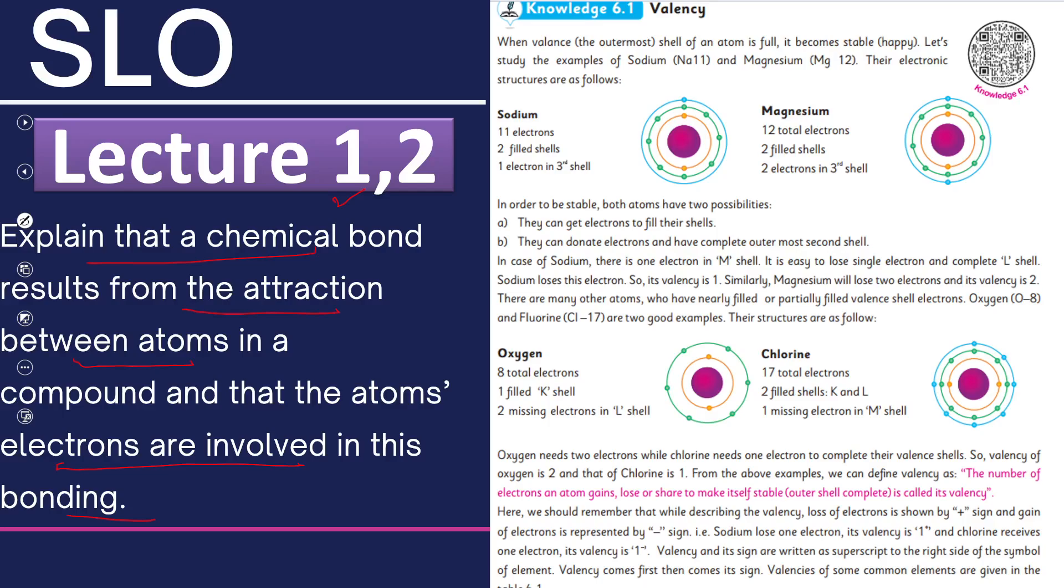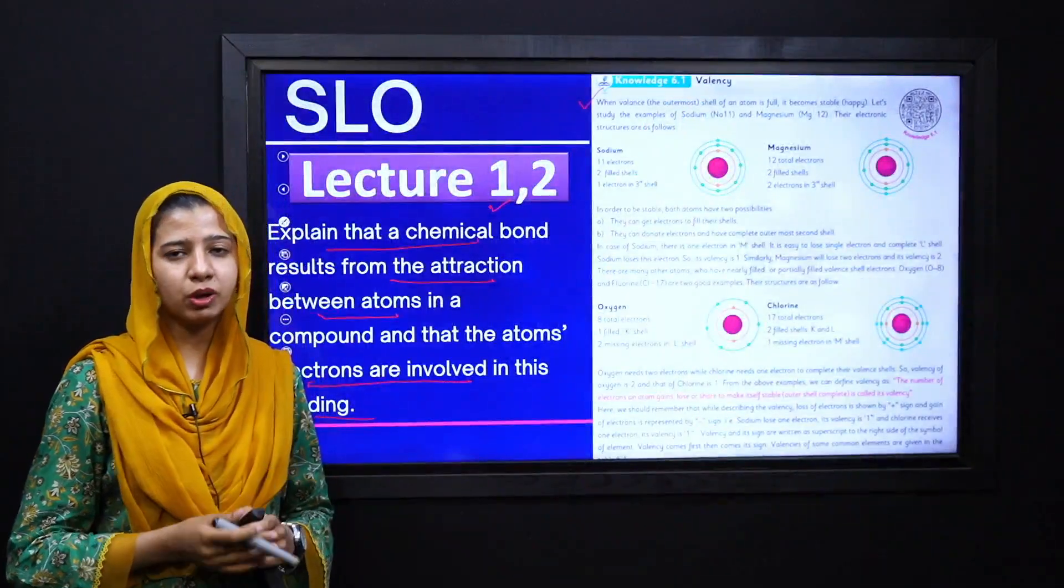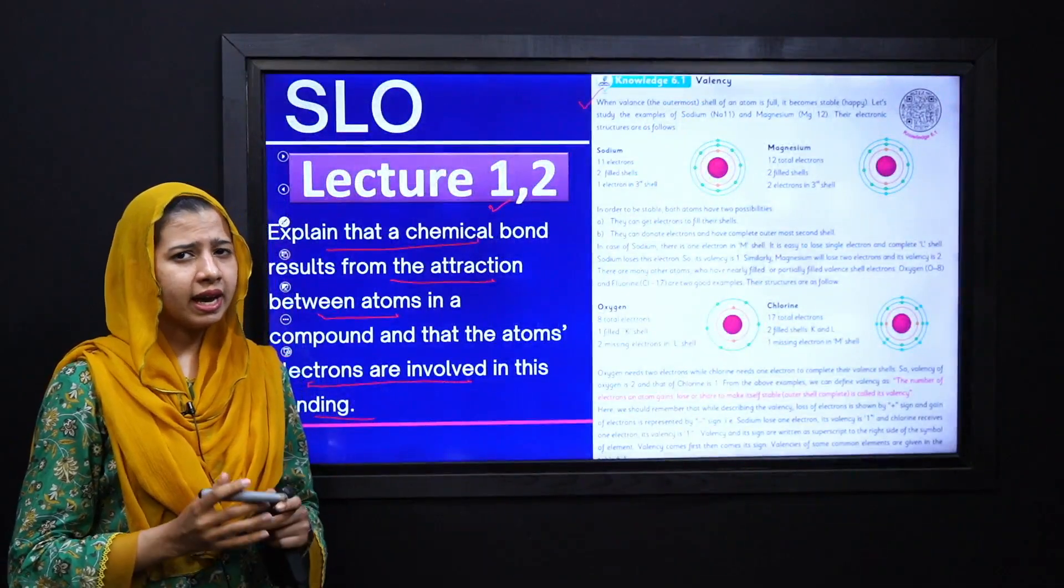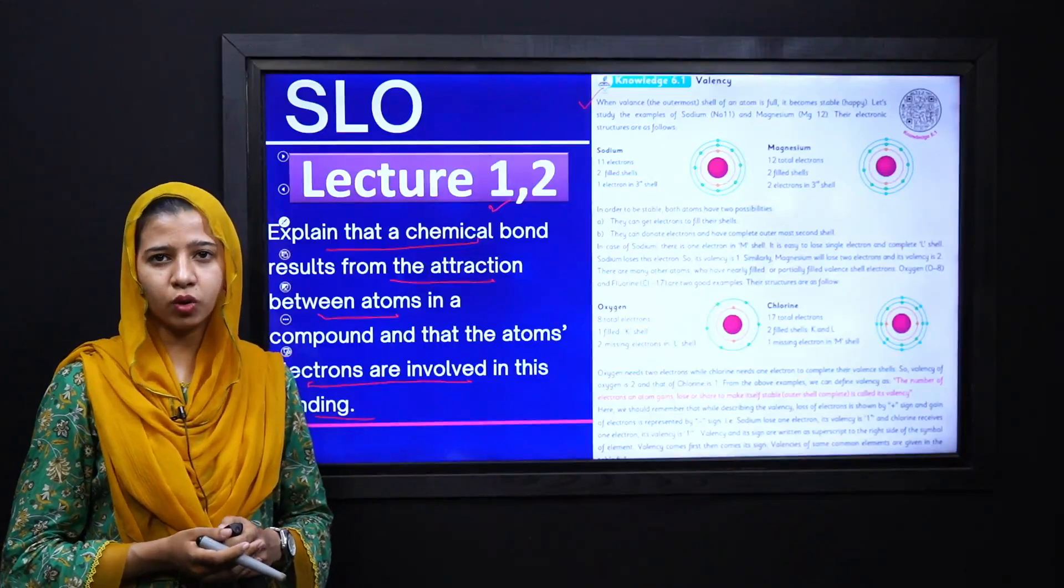We will define chemical bonding, and in addition we will learn about valency. We will understand what valency is and what role it plays in chemical bonding.